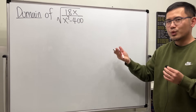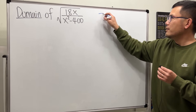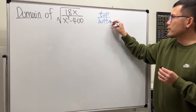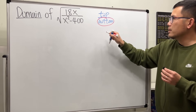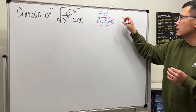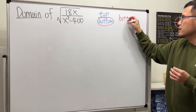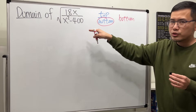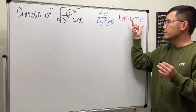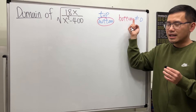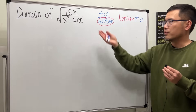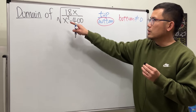I suggest working with the rational part first. Whenever we have a top over bottom, remember the bottom cannot be equal to zero. So set the denominator not equal to zero. After you solve this inequality — because this is a not-equal sign — you end up with the numbers that we cannot plug in for this function.